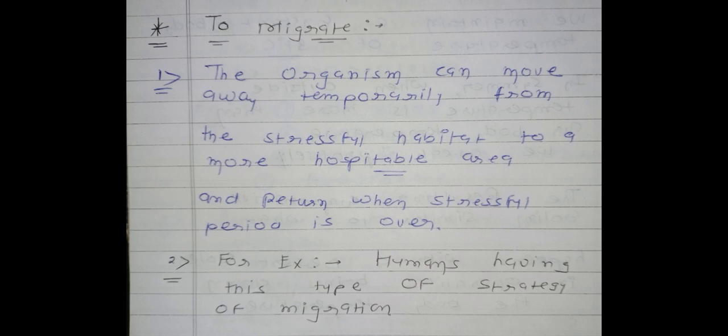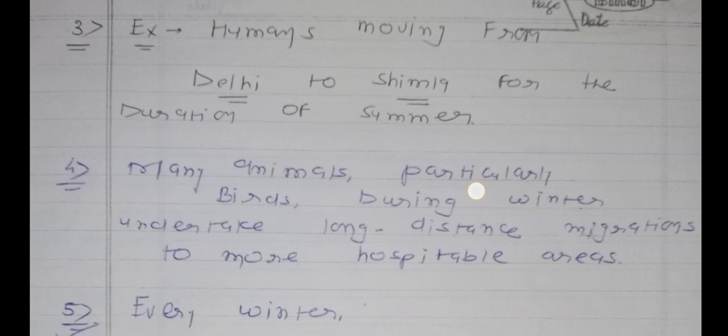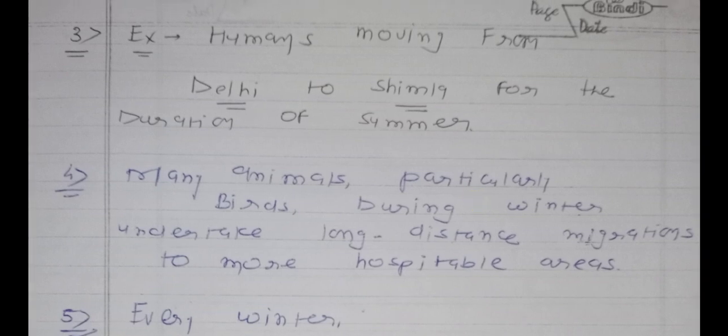For example, humans move from Delhi to Shimla for the duration of summer. In April and May, Delhi's temperature is very high, so people move to Shimla in Himachal Pradesh temporarily — for 15 or 20 days or the duration of a vacation — and then return. This is a strategy used by humans as an example of migration.